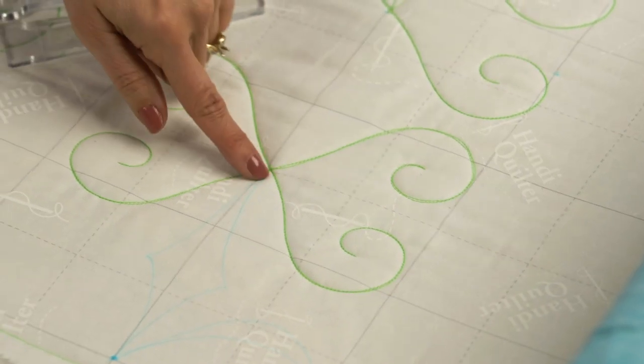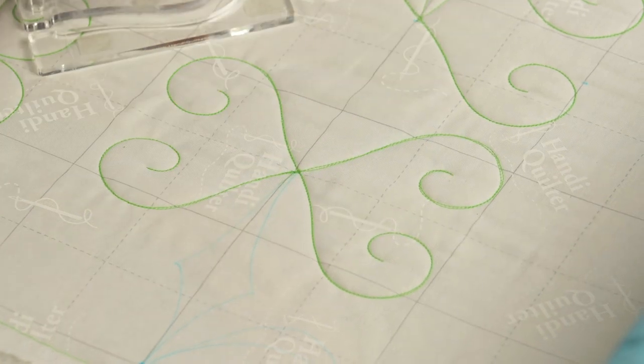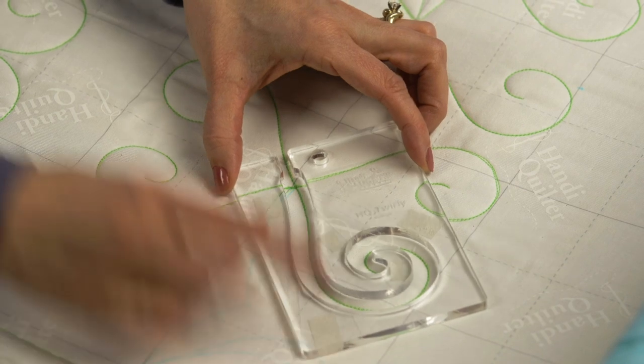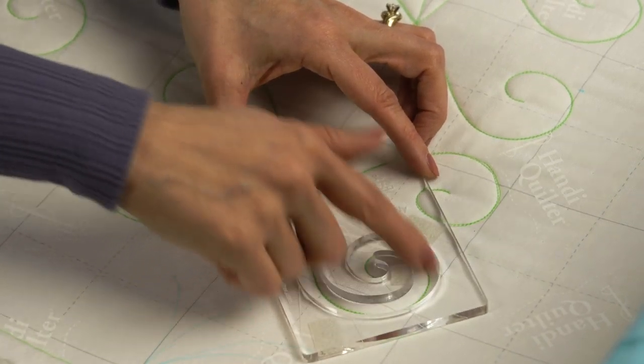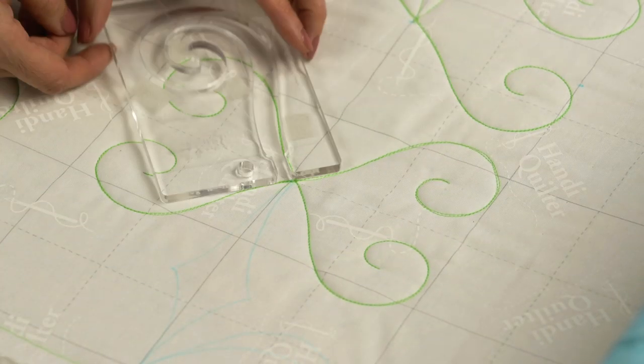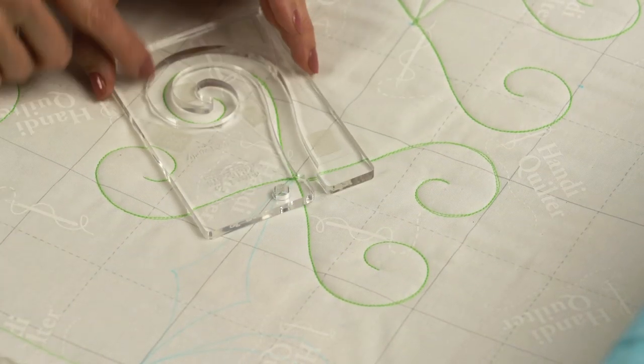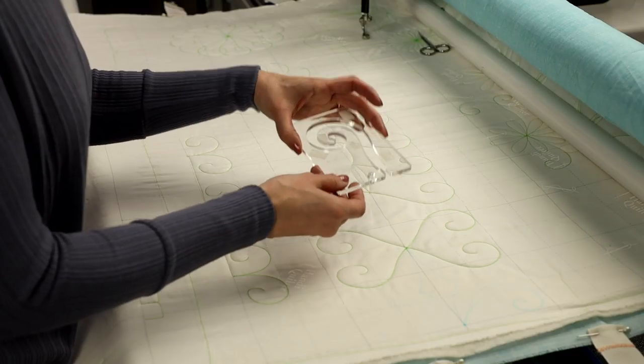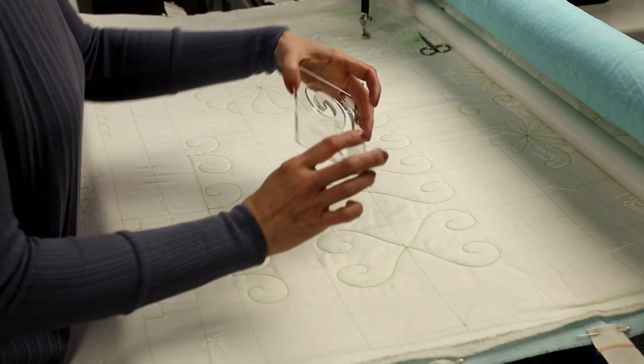Let's move on over here. Similar concept, but from a center point. This one's a little bit trickier. So what you're going to do is stitch one side, and then what I did was rotate it all the way around, stitch this next one, then take the ruler off and flip it over.